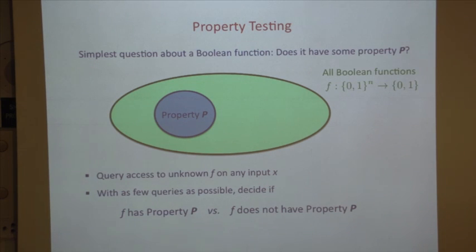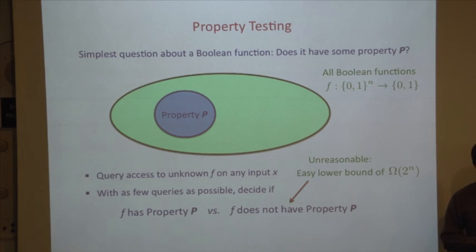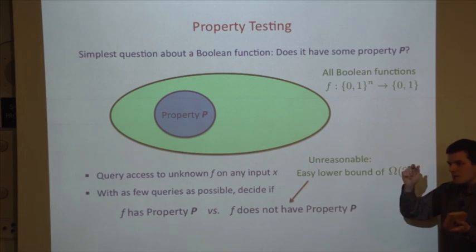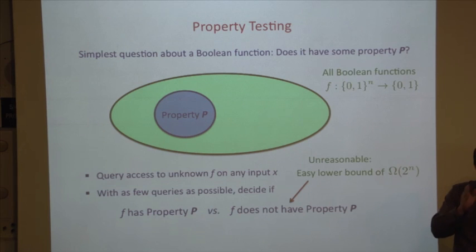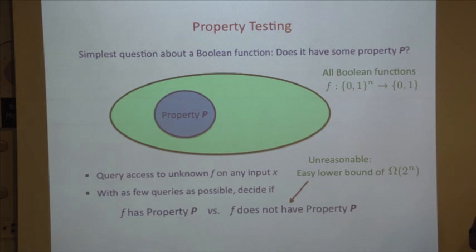This is obviously impossible for any reasonable property — is the function constant? Is it balanced? Is f(x) equal to x1? You can never really tell, because maybe there's one single input that screws you up from having the property. If you wanted to truly answer this question, you can't hope to do so without querying the function on every input for almost any interesting property.